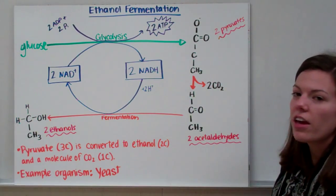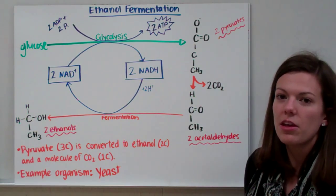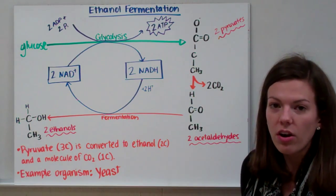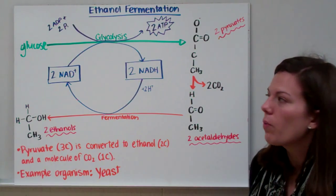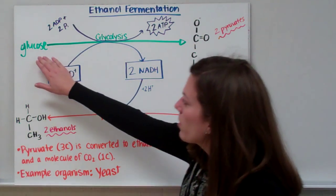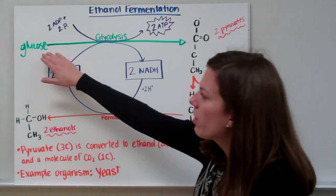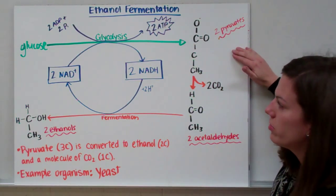First, let's take a look at ethanol fermentation. So this is happening when somebody's making alcohol, for example brewing beer or wine. So again, we're starting with glycolysis. We're breaking our glucose down to two pyruvate molecules.